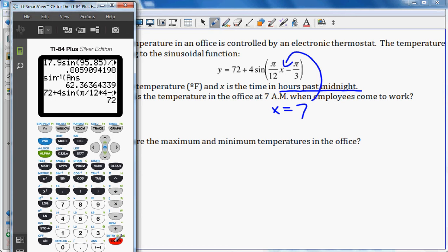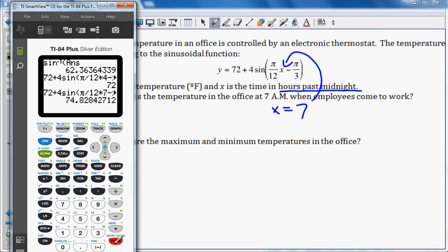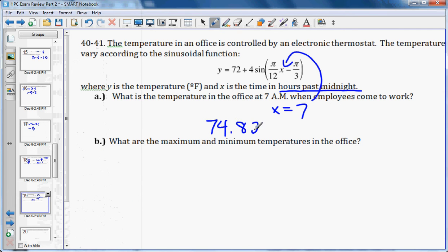Max and min. We know the max equals the midline plus the amplitude, which means 72 plus 4, or 76. The minimum equals the midline minus the amplitude, which means 72 minus 4, or 68.